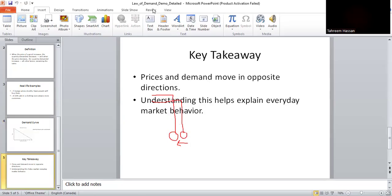The key takeaways: the law of demand tells us prices and demand move in opposite directions. Higher prices means lower demand, lower prices means higher demand. We see this every day when buying foods, clothes, electronics, or even services.